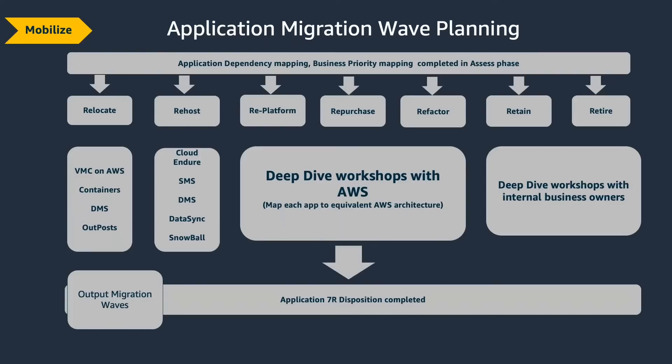With an understanding of the 7Rs, we put applications into certain buckets and filter them through different tools. For each R, there are specific tools we bring to the table. Relocate has tools for straightforward migration. Rehost, Replatform, and Repurchase require a deeper dive — these aren't straightforward tool-and-migrate scenarios. There's a lot of discussion around future architecture. The output of the wave planning workshop is a disposition on migration waves and what actions to take.